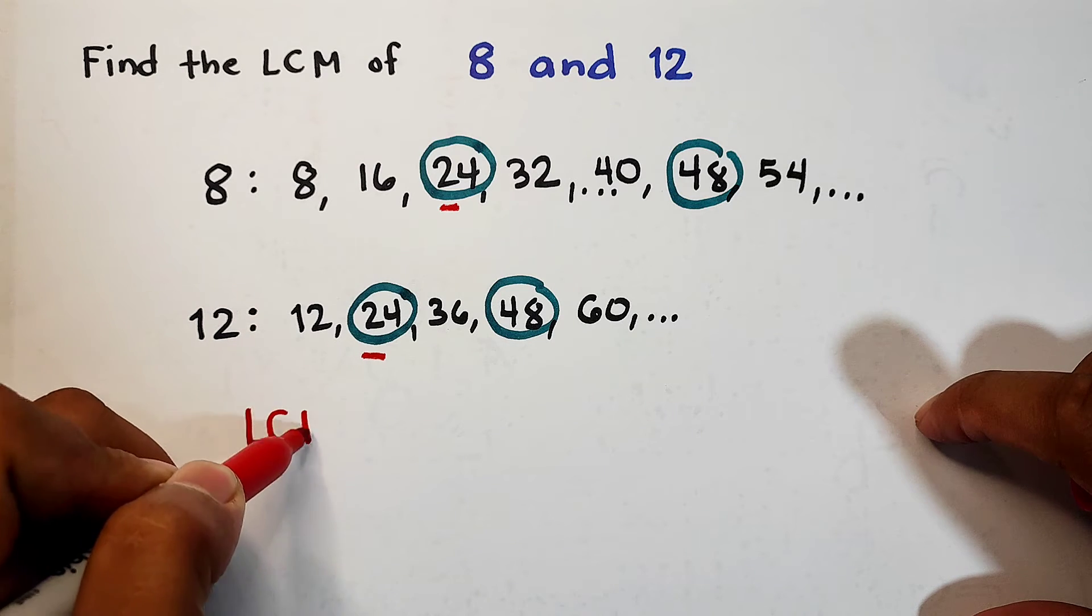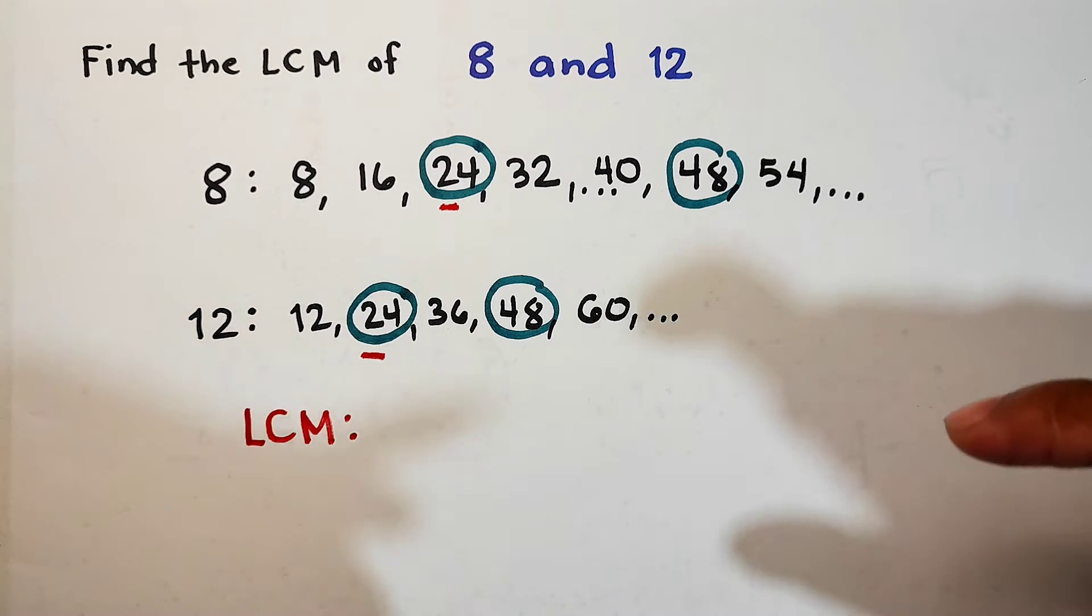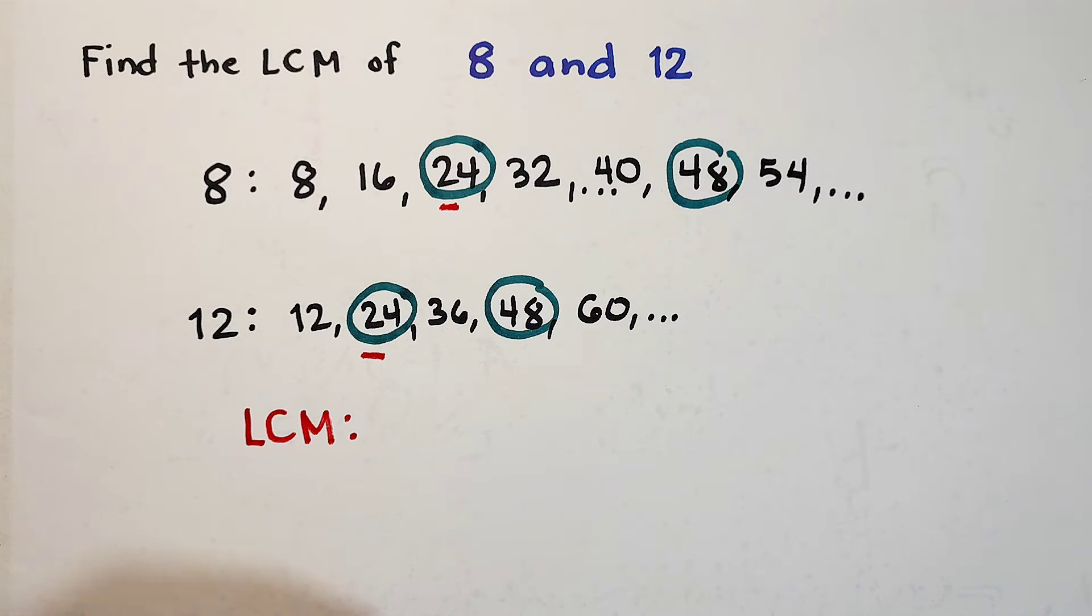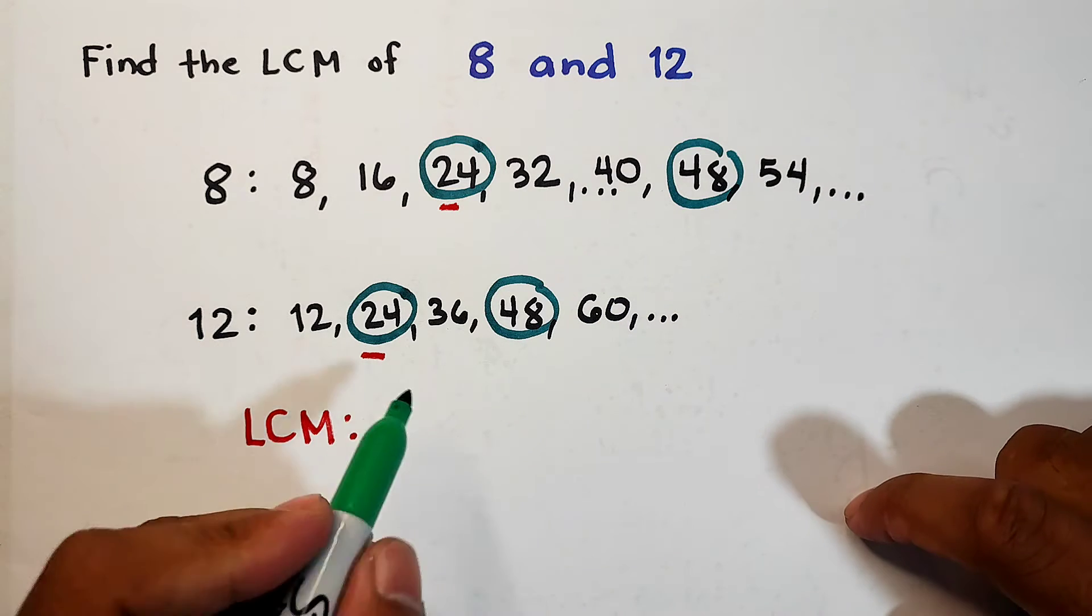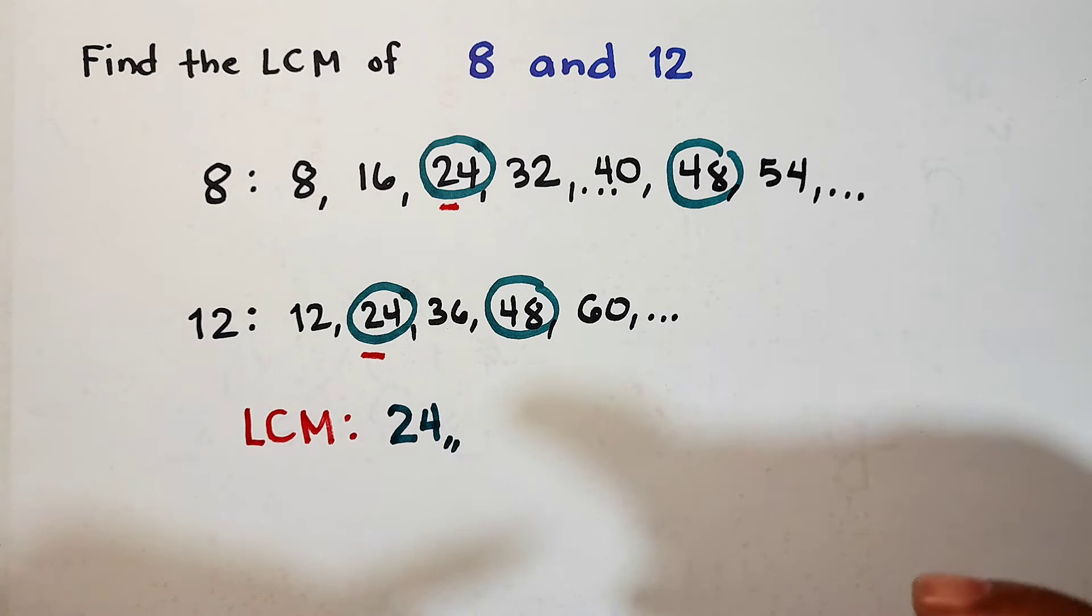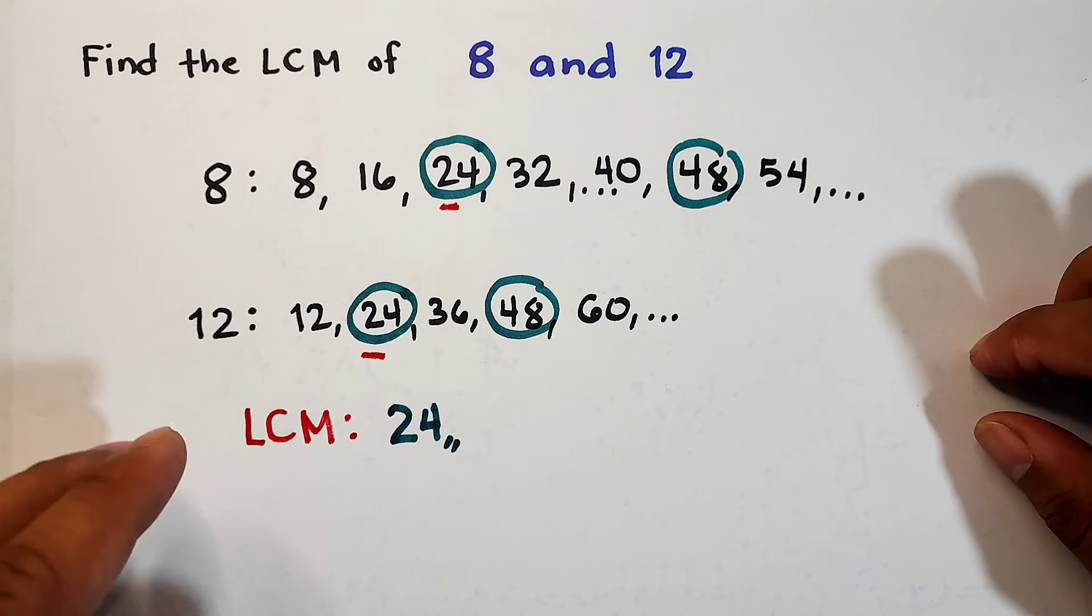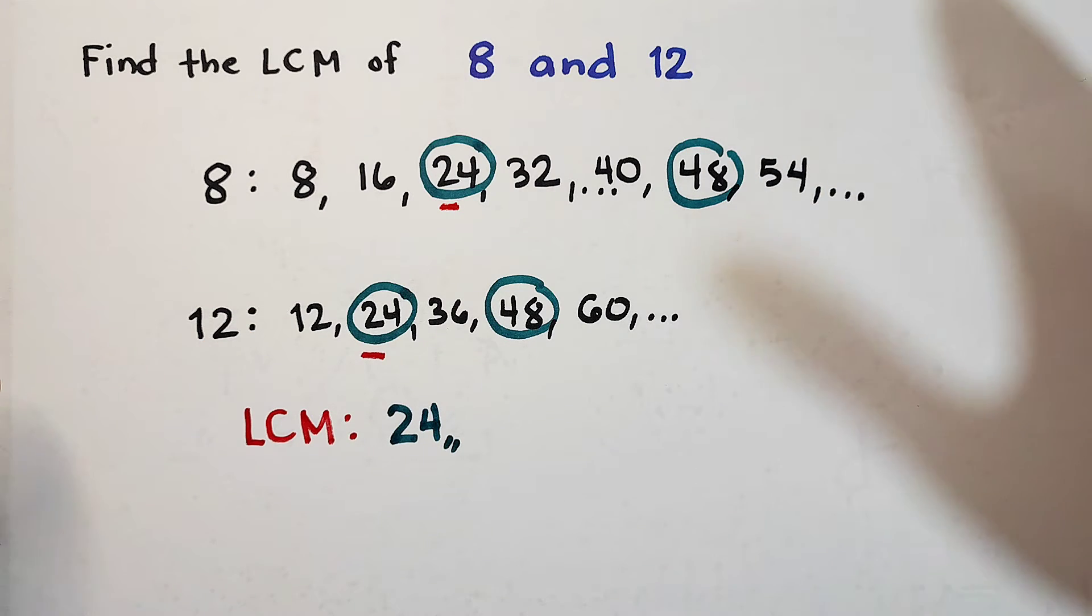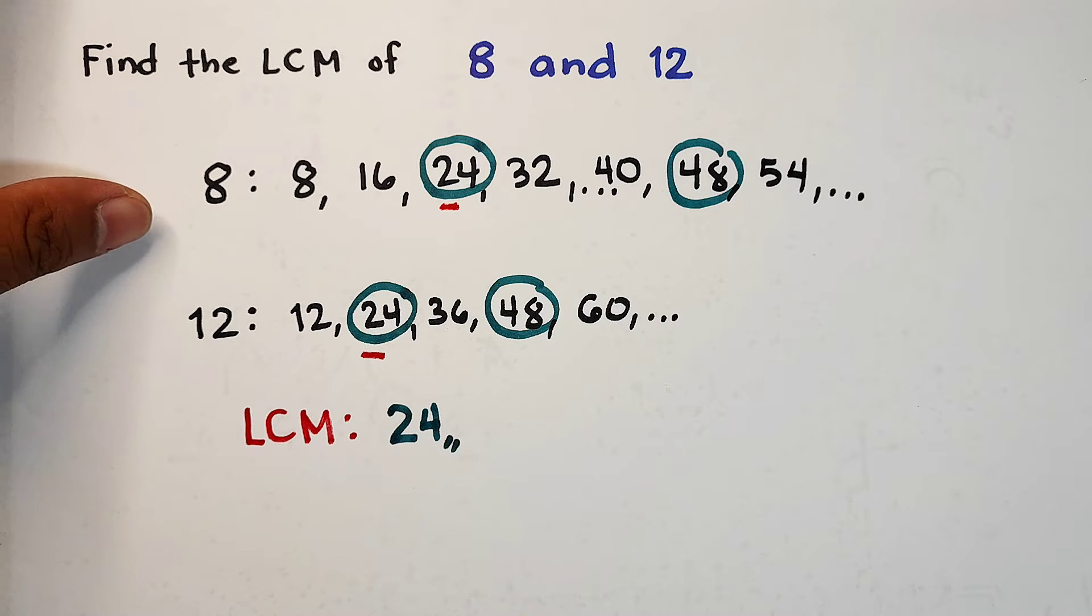But what we need here is the least common multiple. If you will compare 24 and 48, the least common multiple is 24, meaning the LCM of 8 and 12 is simply 24. This is the answer guys. So what happened here in the first example is that we have the listing method.